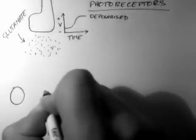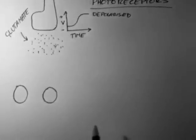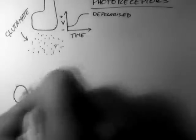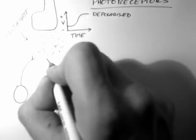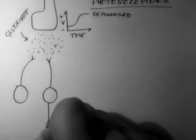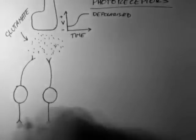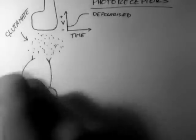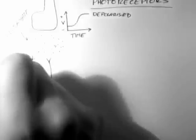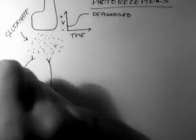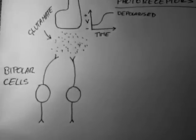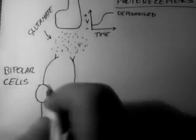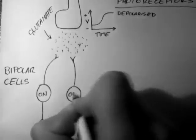Attached to each photoreceptor there are two bipolar cells. These are called bipolar cells because they have an axonal process at each end with their cell body in the middle. They come in two varieties, on and off. And this refers to their action in response to light.